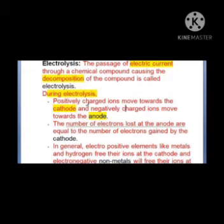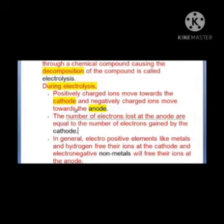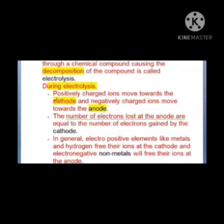The passage of electric current through a chemical compound causing decomposition of the compound is called electrolysis. The characteristics of electrolysis: positively charged ions always move towards the cathode, which is the negatively charged electrode. Negatively charged ions — anions — migrate towards the anode. The cathode is the negative electrode and the anode is the positive electrode.